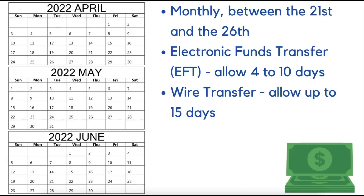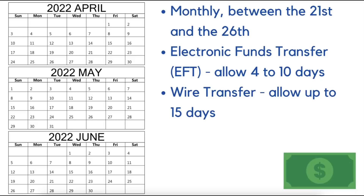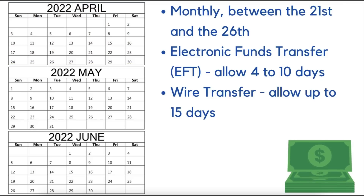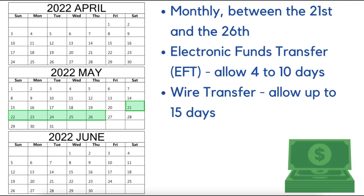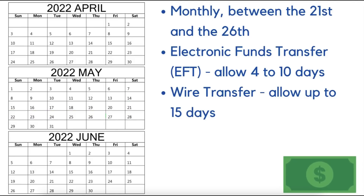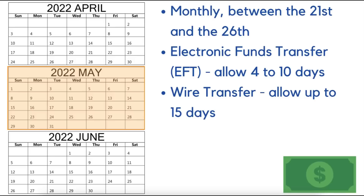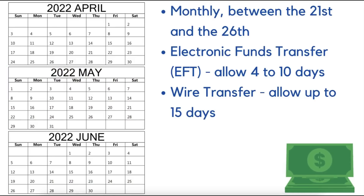AdSense follows a monthly payment cycle between the 21st and 26th. So whatever revenue you earned for April, for example, you're going to receive it between May 21st to May 26th. Same goes for everything you earned for the month of May — you're going to receive it anytime between June 21st to June 26th.